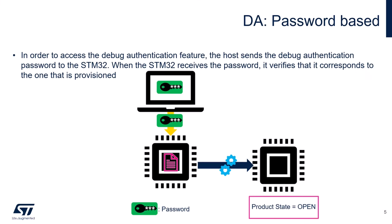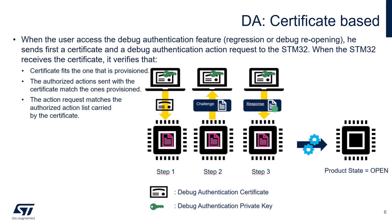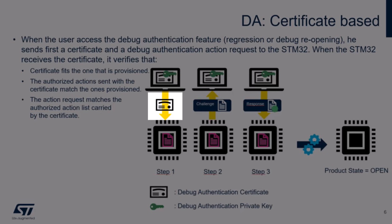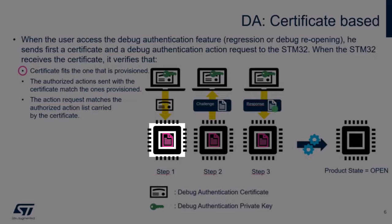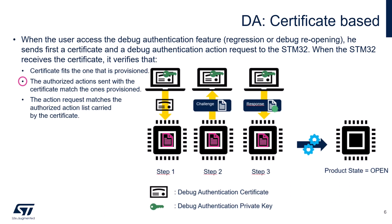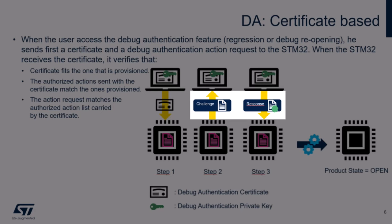On a match, the product state is set to open. In certificate-based mechanisms, both regression and debug opening is possible. The host essentially sends a certificate followed by a debug authentication action request to the STM32 device. The STM32 device validates if the certificate fits the one that is provisioned, the accompanying authorized action matches the provisioned actions, and the action request matches the authorized action list carried by the certificate. The STM32 then starts the challenge-response procedure.